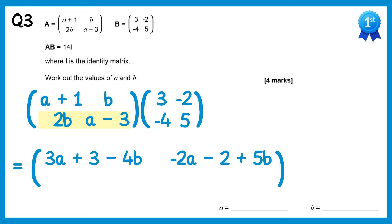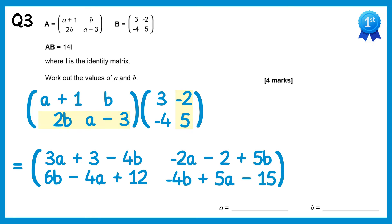Moving to 2b, a minus 3 with 3, negative 4: 2b times 3 is 6b, and negative 4 times a minus 3 is negative 4a plus 12 — remember you're multiplying two negatives there — so the total is 6b take 4a plus 12. Then 2b, a minus 3 with negative 2, 5: 2b times negative 2 is negative 4b, and 5 lots of a minus 3 is 5a take 15, giving negative 4b plus 5a take 15.